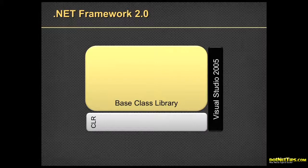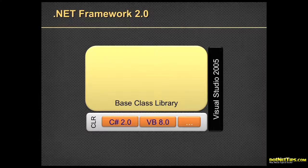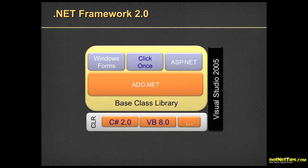Let's talk about what came out in 2.0, because 2.0 was a significant change. At the bottom we have the Common Language Runtime, Visual Studio 2005, and the base class libraries. In 2.0 we got C# 2, VB8, and other language updates. Major updates to ADO.NET including direct access to Oracle — much faster. Major improvements to Windows Forms, ClickOnce, and a huge change in ASP.NET between 1.1 and 2.0. Then from 2.0 to 4, another huge ASP.NET change to make web programming much easier.